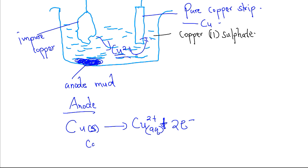At the cathode, we have the formed copper II ions in the solution. They will gain two electrons that are lost at the anode to form pure copper. That is the product, and that is the pure copper.